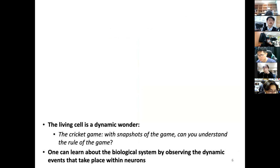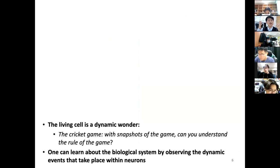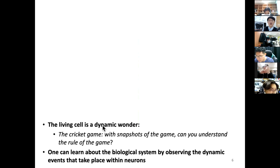We have been exposed to many kinds of neuron and glia morphology, but one big caveat is that cells are in fact very dynamic — not in a static state most of the time. As described here, the living cell is a dynamic wonder. To understand the rules governing cellular neuronal dynamics, we have to realize it's not easy to understand the system by just watching a snapshot.